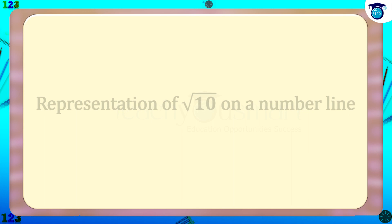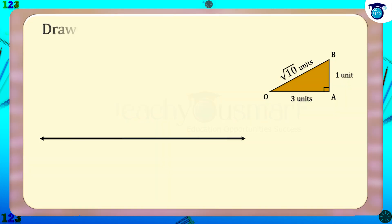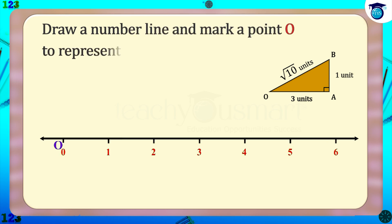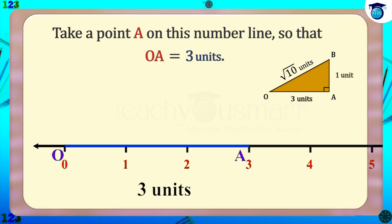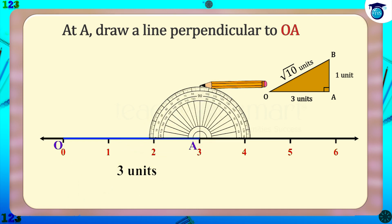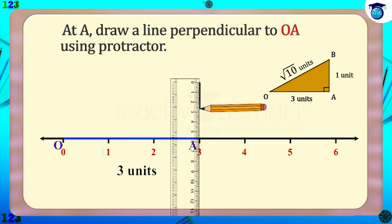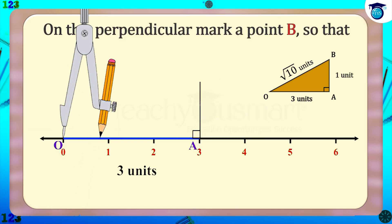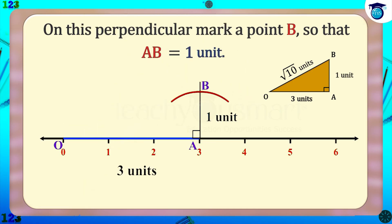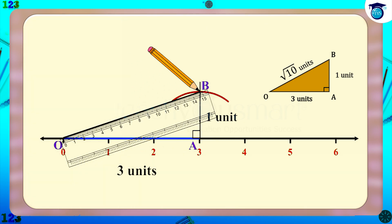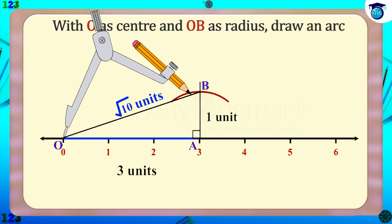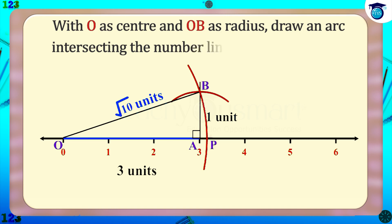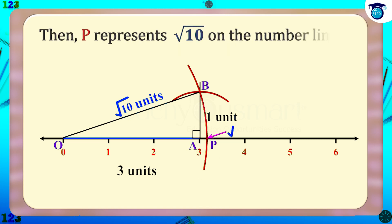Now let's see the representation of √10 on a number line. Draw a number line and mark a point O to represent 0 on it. Take a point A on this number line so that OA = 3 units. At A, draw a line perpendicular to OA using a protractor. On this perpendicular, mark a point B so that AB = 1 unit. Join OB — now we have √10 units on the hypotenuse of the right-angled triangle OAB. With O as center and OB as radius, draw an arc intersecting the number line at P. Then P represents √10 on the number line.